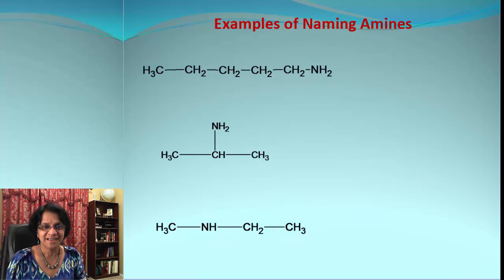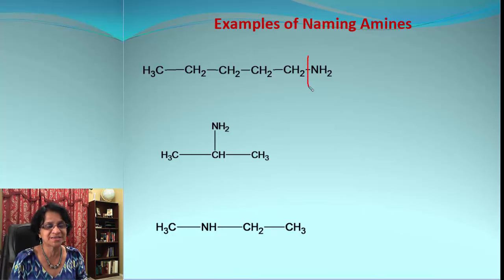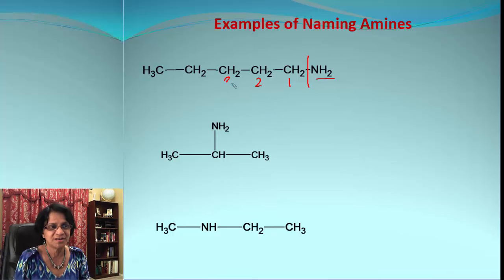This is our first example. I'm going to again split this so I get the amino group towards the end and then I need to count the number of carbon atoms. The numbering begins with the carbon atom which is closest to that NH2. So there we go, we got a five-carbon atom chain.